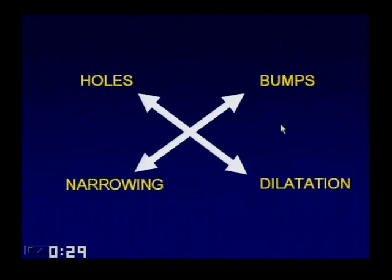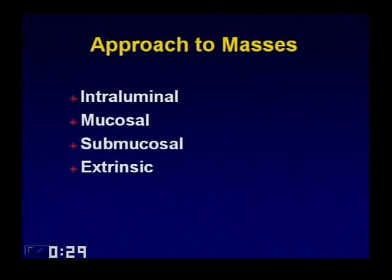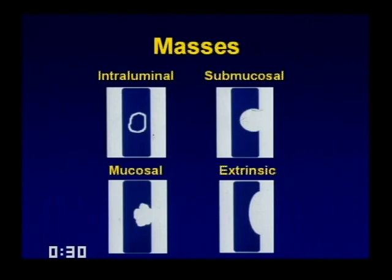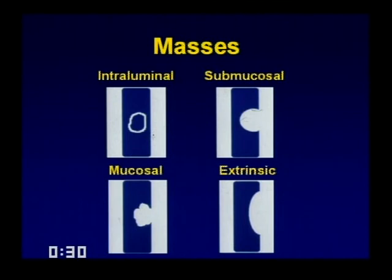Any time you see a mass, ask yourself: is it totally intraluminal — floating around like a bezoar or foreign body? Is it originating from the wall — mucosal or submucosal? Or is it extrinsic? A prototypical mucosal lesion like an adenocarcinoma is irregular with acute angles to the wall. A submucosal lesion also originates from the wall with acute angles but has smooth, intact overlying mucosa. Something extrinsic will initially have an obtuse angle — like pressing a ping-pong ball against a balloon. These are rules of thumb to be used with intelligence based on anatomy and location.